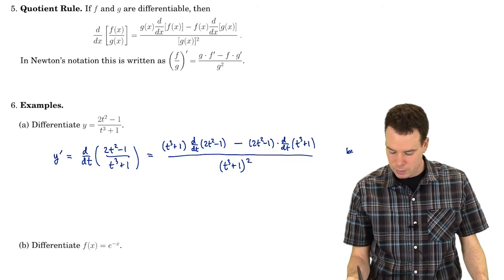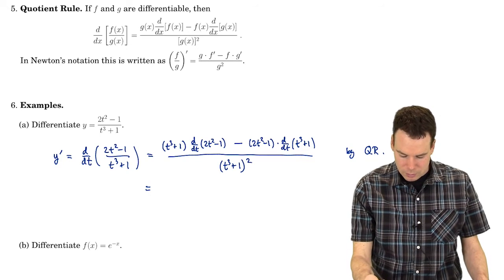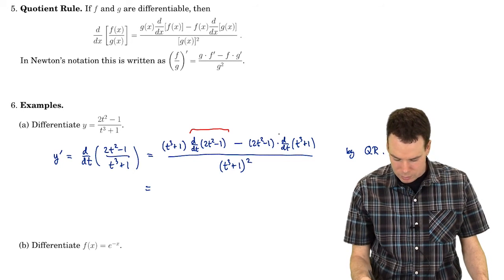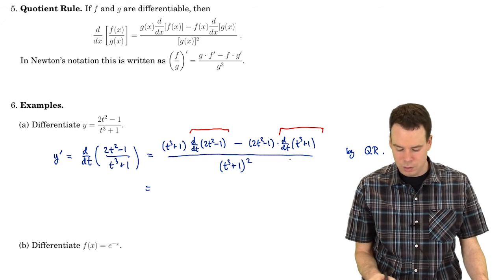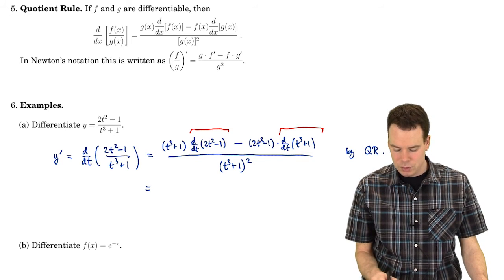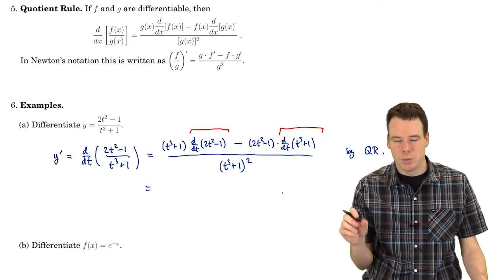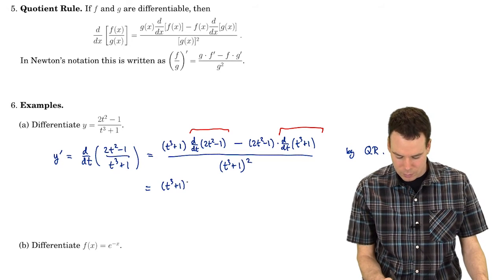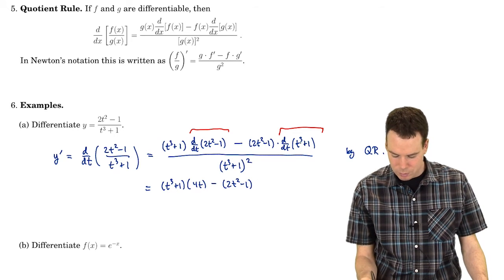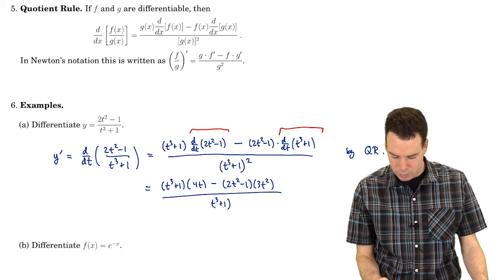And this was by the quotient rule. Now we can go ahead — there are still derivatives that we have to evaluate and compute. All the quotient rule did was break it down into an expression involving the original functions and their derivatives. Now we compute those. The derivative of the top function is 4t, and then (2t² - 1) times the derivative of the bottom function, which is 3t², all over (t³ + 1) squared.